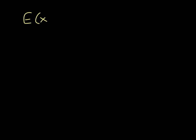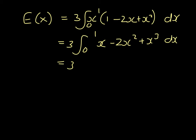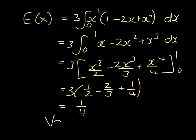We need to work out the expectation of x, which is the integral from 0 to 1 of k times (1 minus x) all squared multiplied by x. So that's 3 times the integral from 0 to 1 of x minus 2x squared plus x cubed, giving x squared over 2 minus 2x cubed over 3 plus x to the 4 over 4. So that's 3 times (1 half minus 2 thirds plus 1 quarter), which is 1 quarter. The variance of x is therefore 1 tenth minus 1 quarter squared, which is 3 eighths.